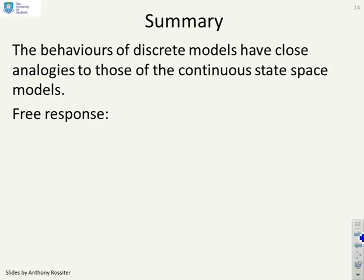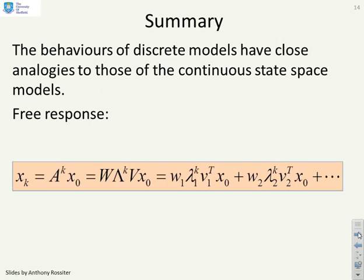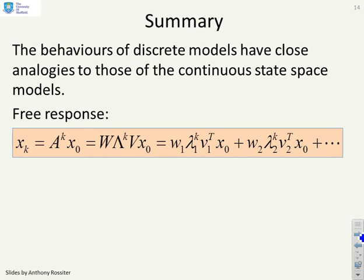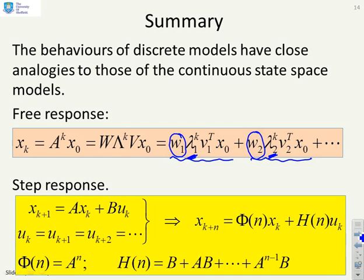So, a summary. The behaviors of discrete models have close analogies to those of the continuous state-space models. The free response can be broken down into bits along given eigenvectors. You've got the eigenvector which is the direction where the behavior is happening. And then you've got a mode which is the eigenvalue. The step response can be derived in a relatively simple fashion using Z-transforms or indeed otherwise if you want and you find the step response has this form here. N steps ahead you have B + AB all the way up to A^{n-1}B.